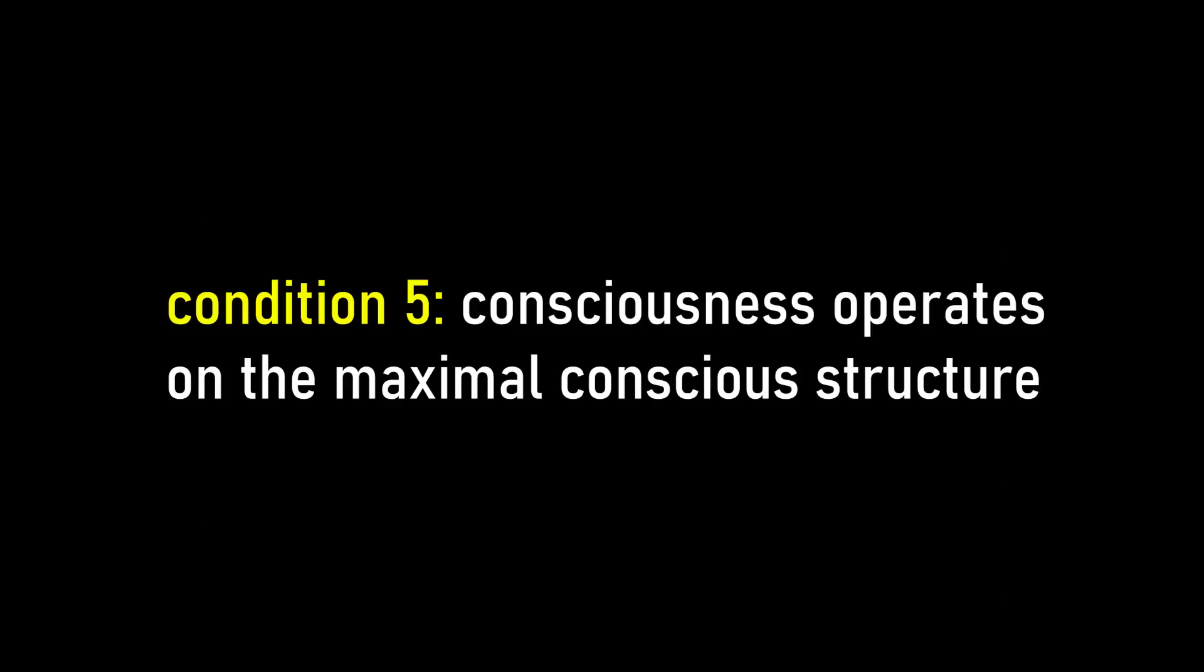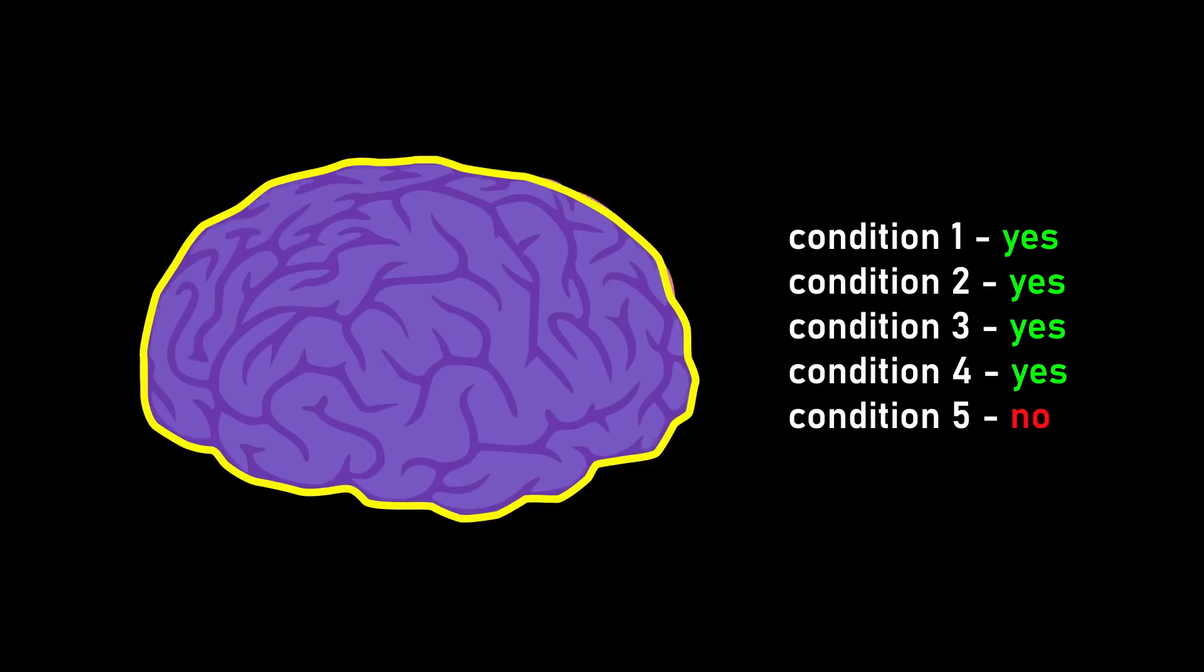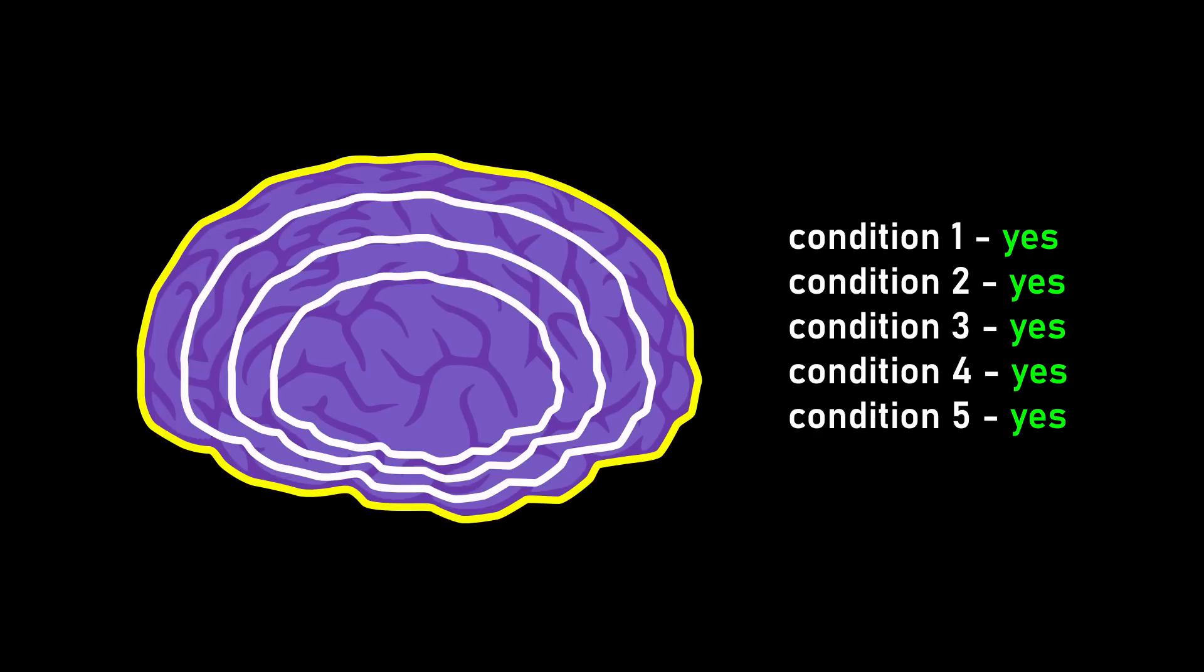Condition number five, consciousness operates on the maximal conscious structure. A subpart to a system can satisfy the other four postulates, but not have its own consciousness because it is absorbed into the biggest conscious structure that is not a subpart of something even bigger. Or else, there would be multiple instances of consciousness occurring in the same brain.